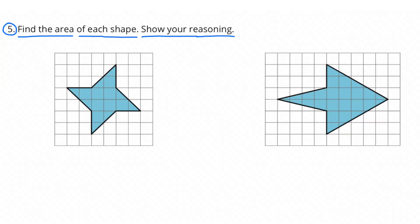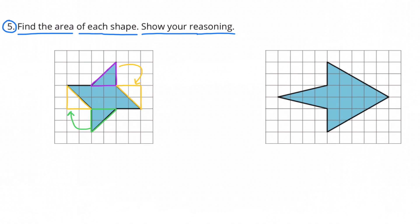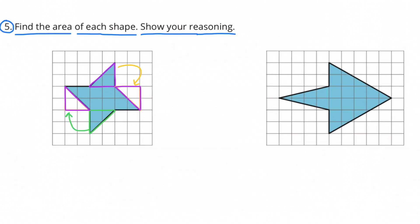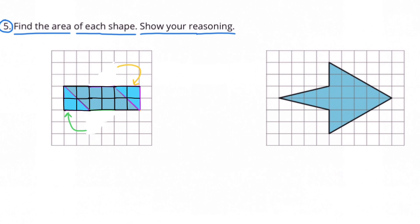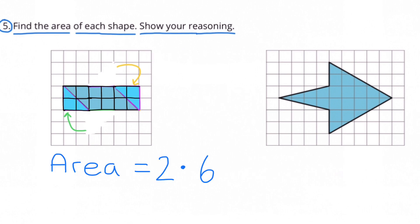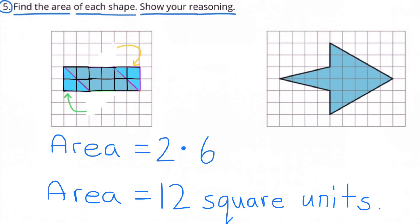Number 5. Find the area of each shape. Show your reasoning. The area of the first shape is 2 units by 6 units, which is 12 square units.